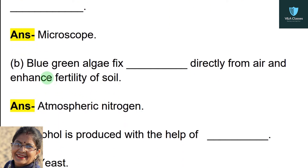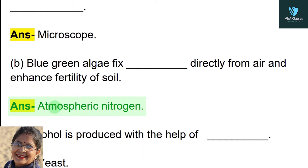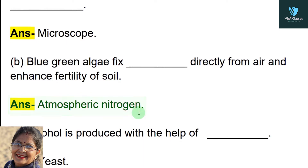Second fill in the blank is: blue-green algae picks blank directly from air and enhances fertility of soil. Answer will be atmospheric nitrogen.